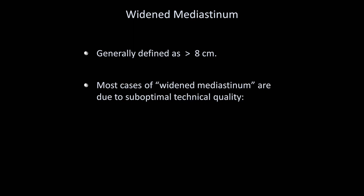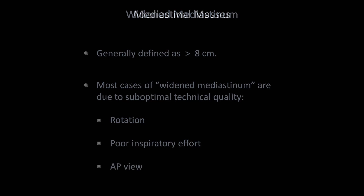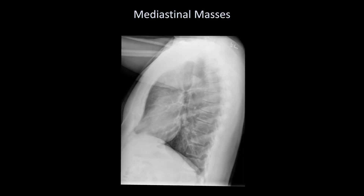Now I'll move on to abnormalities of the mediastinum and hila. The most important of these is a widened mediastinum, generally defined as greater than 8 cm on either a PA or AP film. However, most cases of an apparently widened mediastinum are due to rotation of the patient, poor inspiratory effort, or an AP view. To best understand mediastinal masses, which are responsible for truly widened mediastinum, one must be familiar with the four regions of the mediastinum. These regions are not precisely defined by any actual tissue planes, and their definition varies slightly between sources.